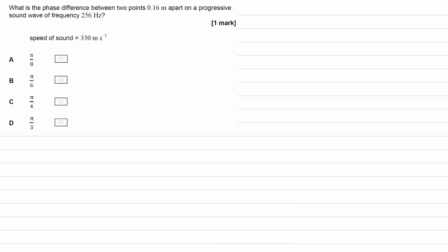What is the phase difference between two points 0.16 meters apart on a progressive sound wave of frequency 256 Hz? The speed of sound is 330 m/s.